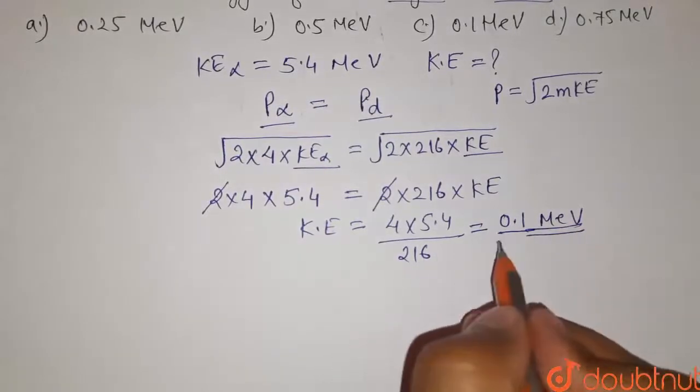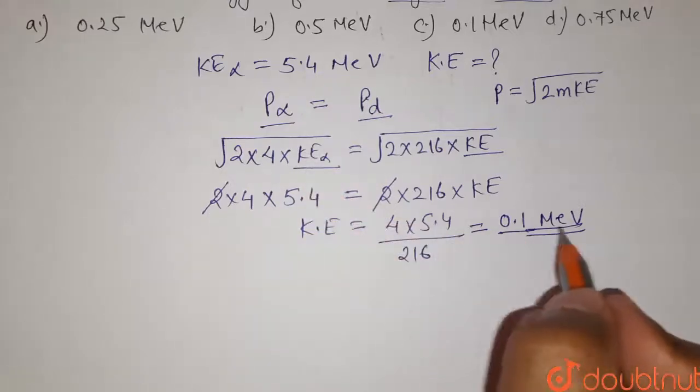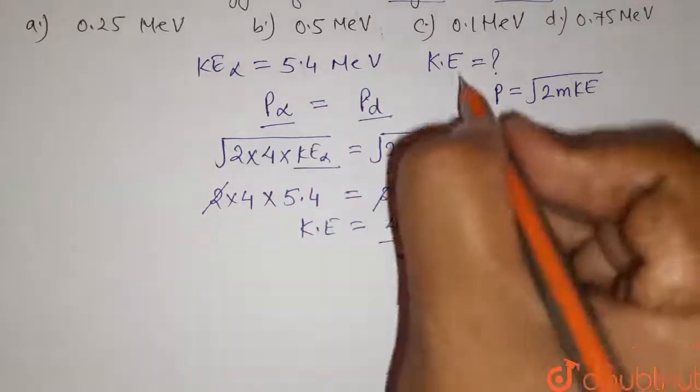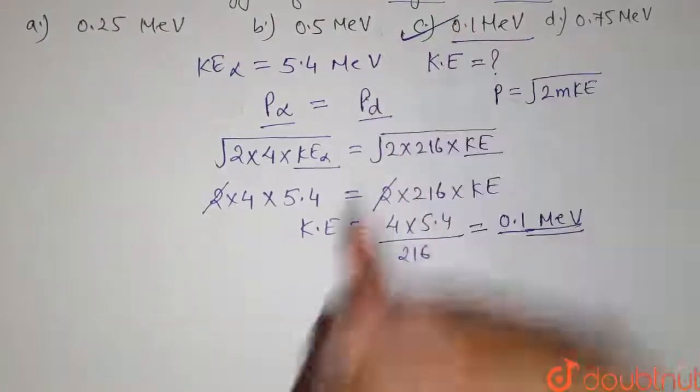So this is the answer for kinetic energy or recoil energy of daughter nuclei. So here option C, 0.1 mega electron volts, will be our correct answer for this question.